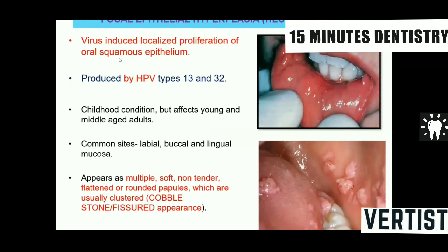Some viruses produce localized proliferative changes, as caused by human papillomavirus — resulting in focal epithelial hyperplasia or Heck's disease. Such proliferative lesions seen in the oral cavity give a cobblestone or fissured appearance to the mucosa.